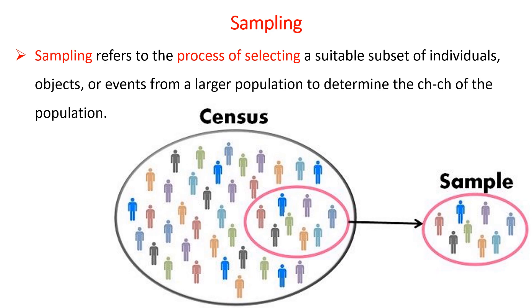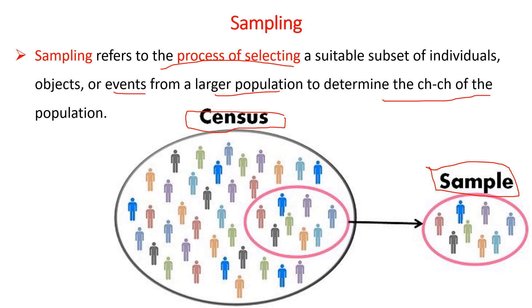Sampling refers to the process of selecting suitable subsets of individuals, objects, or events from a larger population, just to determine the characteristics of the population. Actually, taking a sample from the entire population or conducting a census is very challenging when the population is very large. Conducting a census is challenging or might be impossible in that case, so we have to take a sample which is representative of the population.